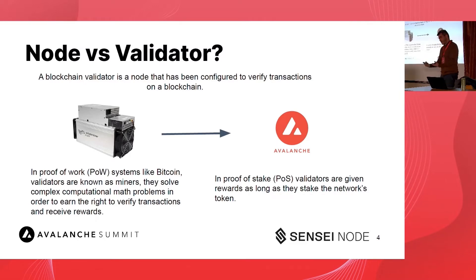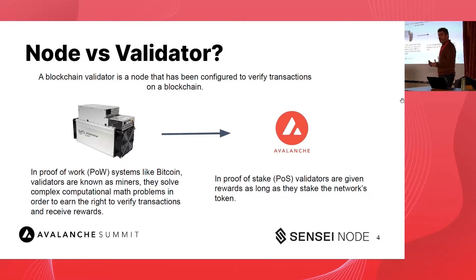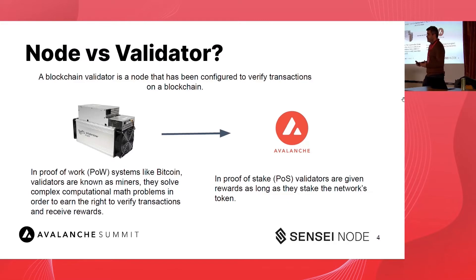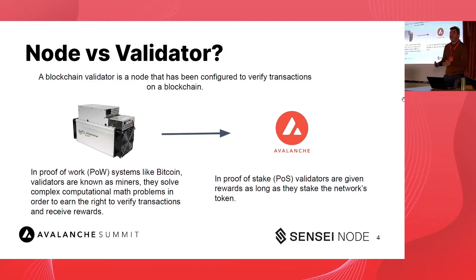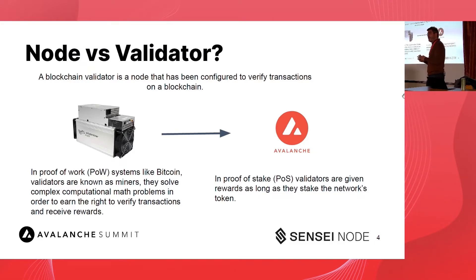Proof-of-stake is a much greener technology. Instead of computational power, you put coins that have value on that blockchain at stake. This makes it quicker and more efficient for networking reasons. When you stake coins, you run a node, leave it running and open to the world so other peers can connect to it, and you validate and verify blocks.